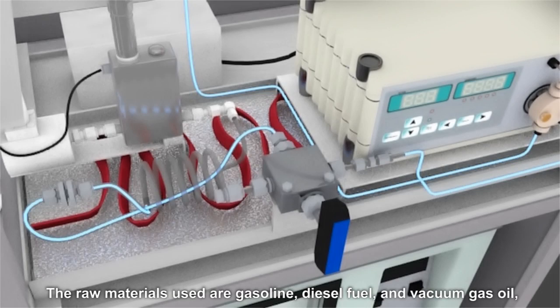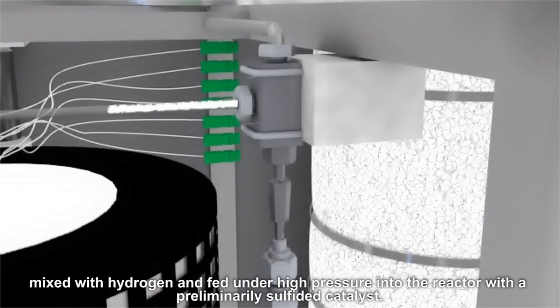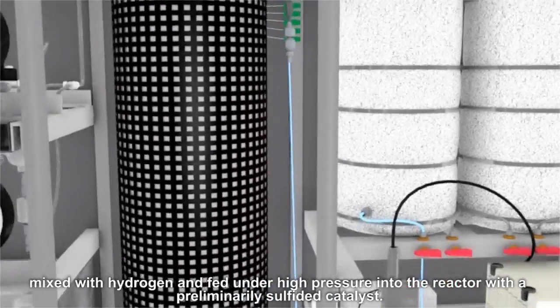The raw materials used are gasoline, diesel fuel, and vacuum gas oil, mixed with hydrogen and fed under high pressure into the reactor with a preliminarily sulphided catalyst.